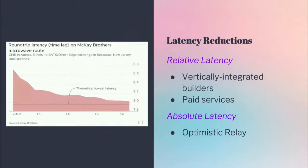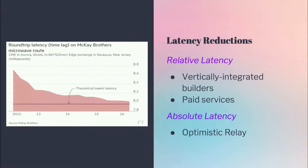This is reminiscent of what we see in traditional finance, where there's a graph of microwave routes between two exchanges. We see a large decrease in latency above the red bar — that's the relative latency reduction. But then there's a theoretical lowest latency limit, which represents absolute latency reductions. Currently in the PBS ecosystem, even this theoretical latency could be reduced a lot because we could just make more efficient systems.